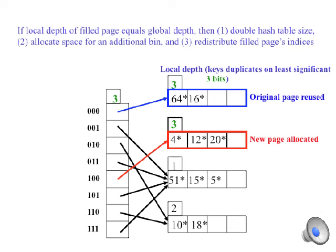Because two bins are now distinguished by three bits, we must double the hash table to eight locations as well, with a global depth of three.